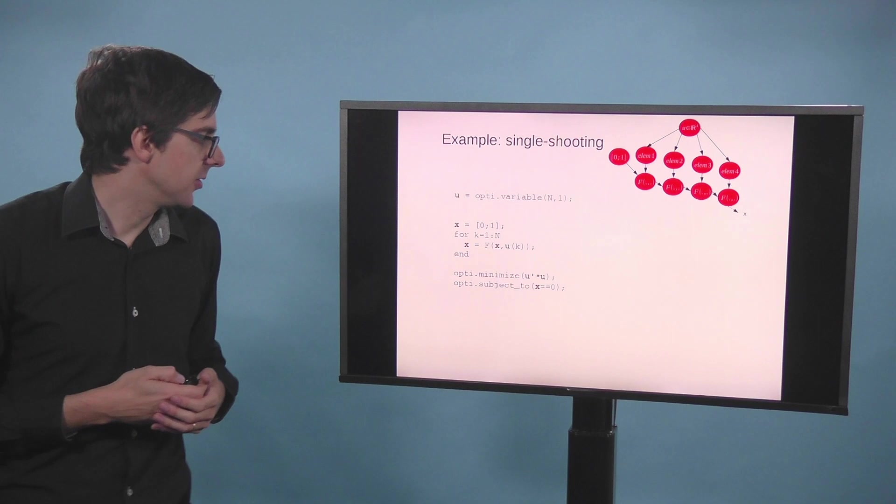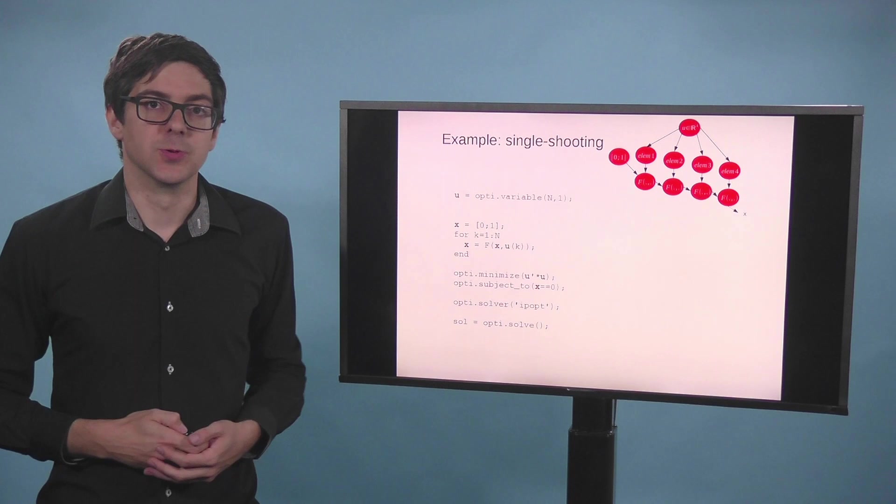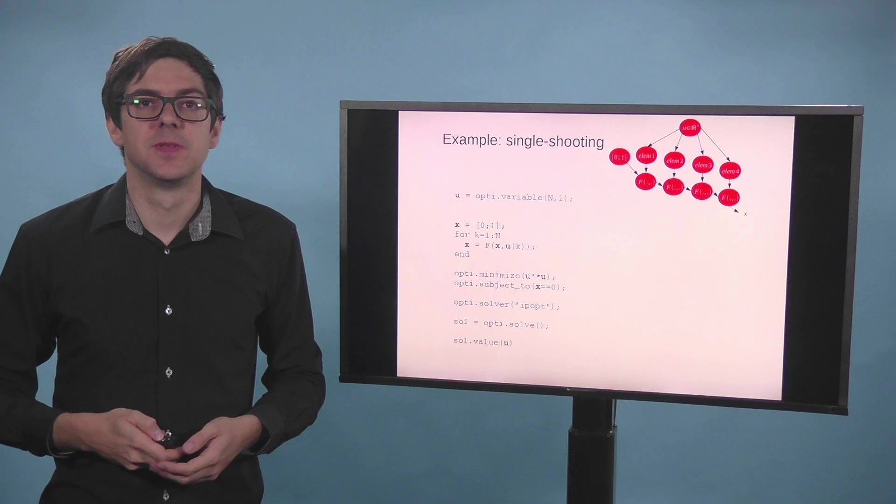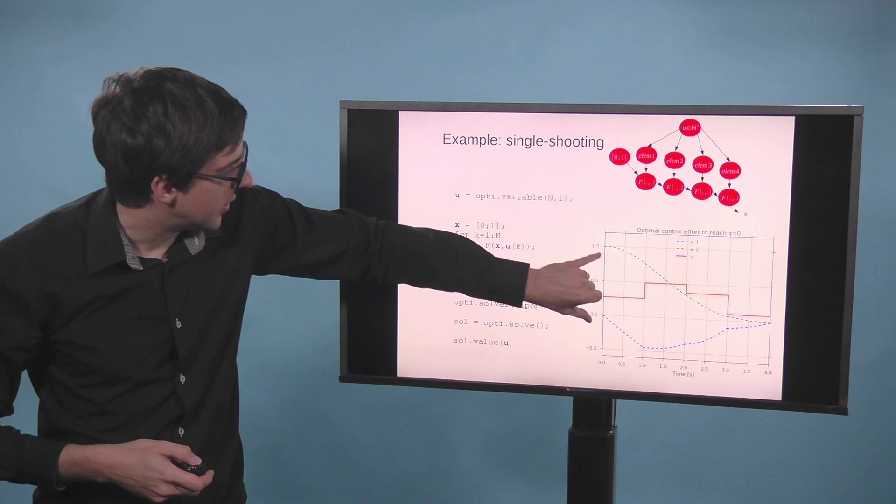So we're looking for the control signal that brings all states to 0 with minimal effort. Simple optimal control. We choose a solver like IPopt. We solve the actual problem. And now we can query the solution for the numerical value of these optimization variables. And we would get a graph like this. So we have four control inputs. They are given in red. And we have the states that start from 1, 0 and in four time steps collapse to 0 as we required.